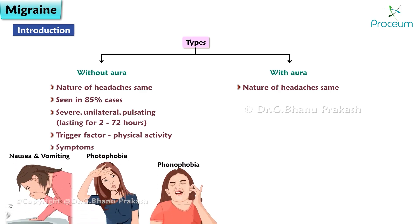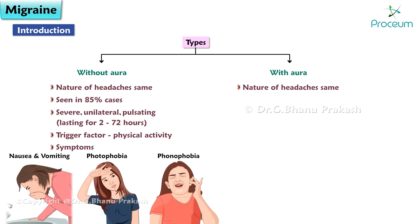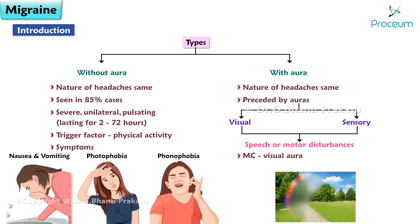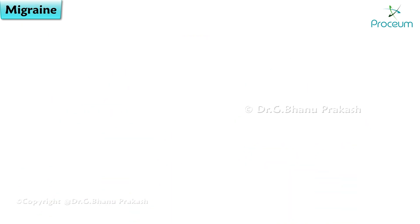Associated symptoms of migraine without aura include nausea, vomiting, photophobia, and phonophobia. In migraine with aura, the headache is preceded by auras — visual and sensory disturbances, or speech and motor disturbances. Most commonly, visual aura occurs 20 to 40 minutes prior to the appearance of the headache.